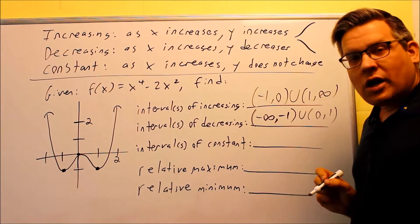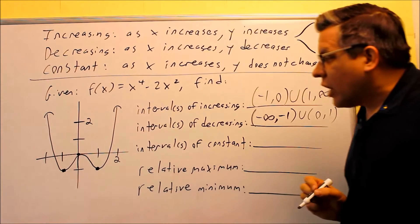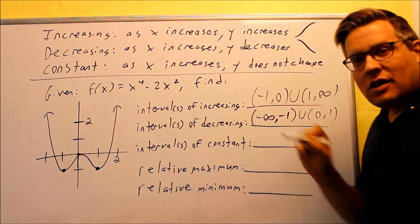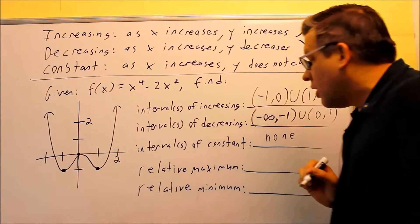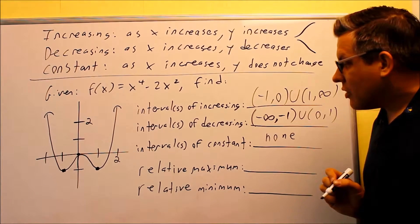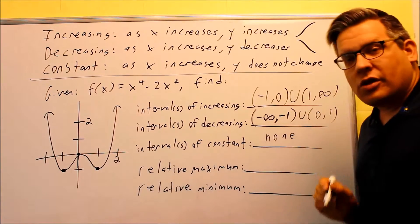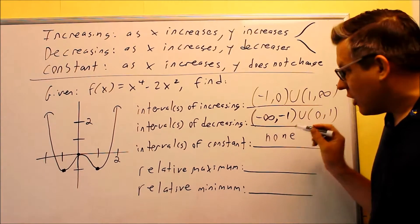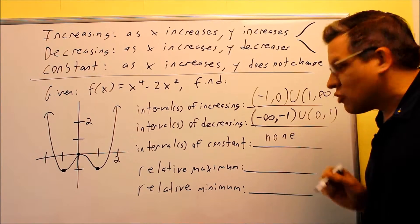Next, let's find the intervals of constant. We're looking for any horizontal portion of the graph that's staying flat. There are actually no such portions here, so the answer is none. There are no intervals of constant because there are no horizontal pieces in this graph.